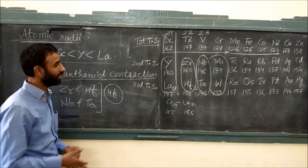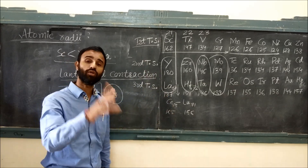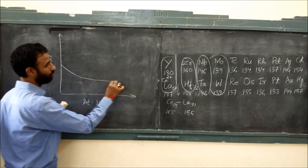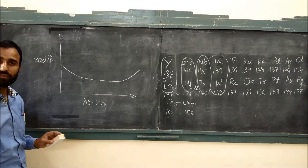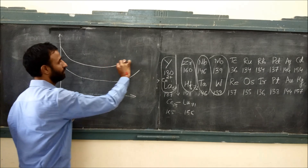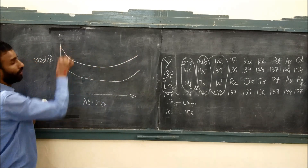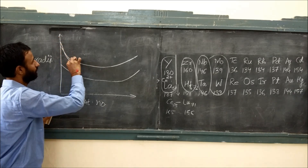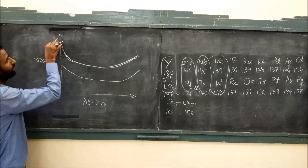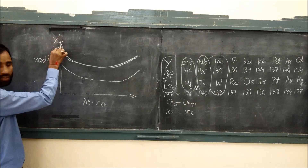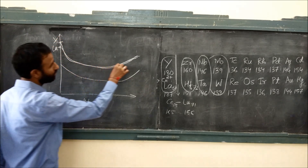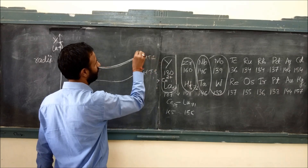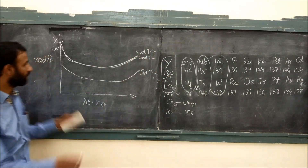So, the second and third series have almost similar size because of lanthanoid contraction. You should plot a graph between radii and atomic number: there is a decrease in size, then it is almost the same, and at the end it increases — like this — for all three transition series. For the third series, only yttrium and lanthanum show a difference in size since there is no lanthanoid contraction there; remaining elements are almost the same size.